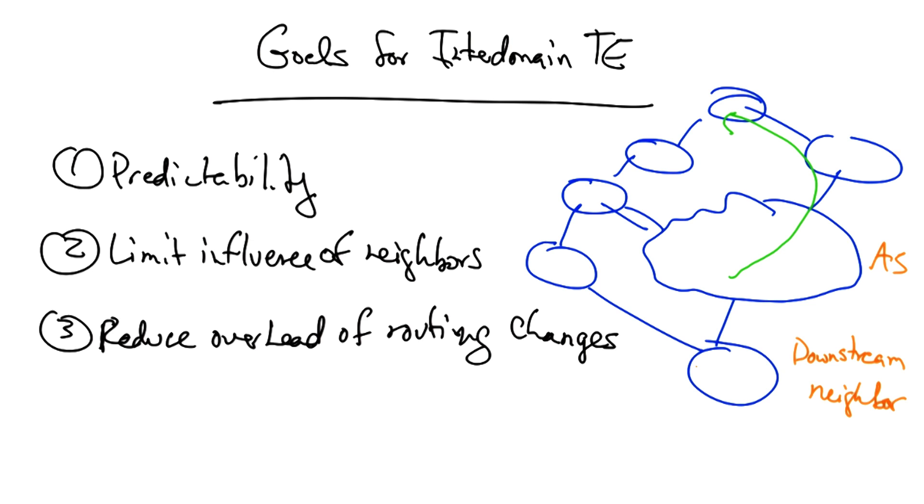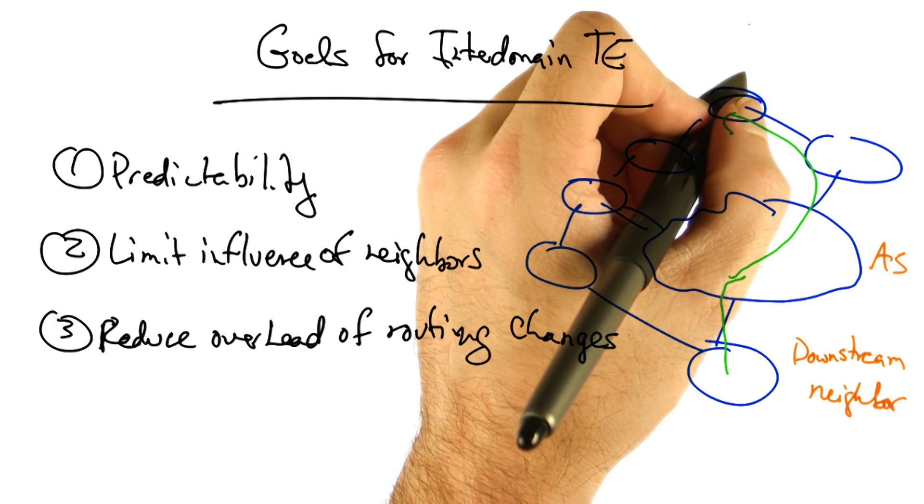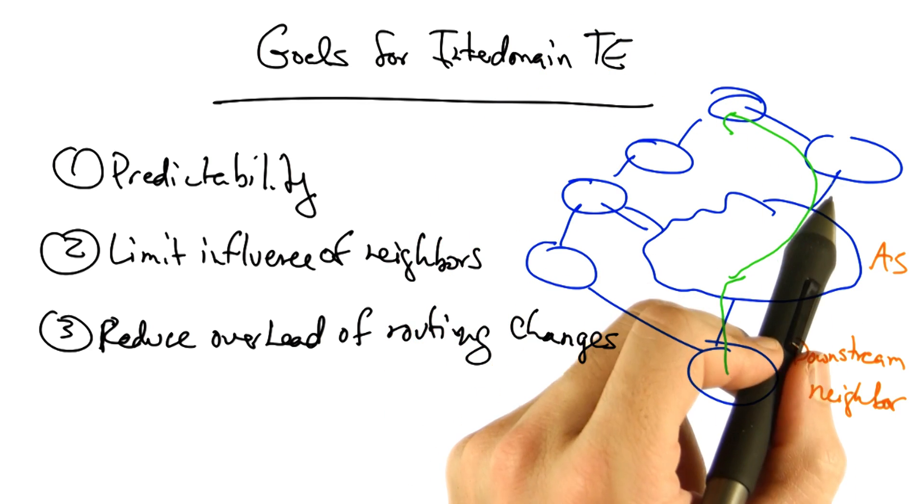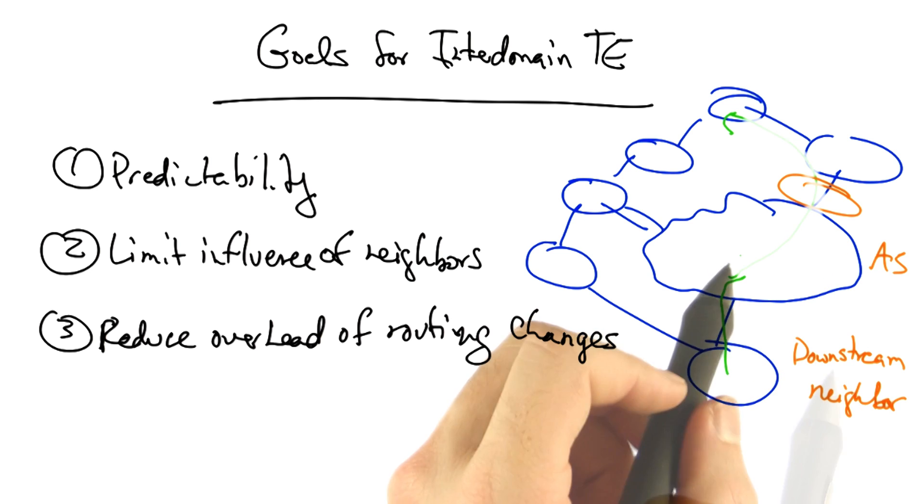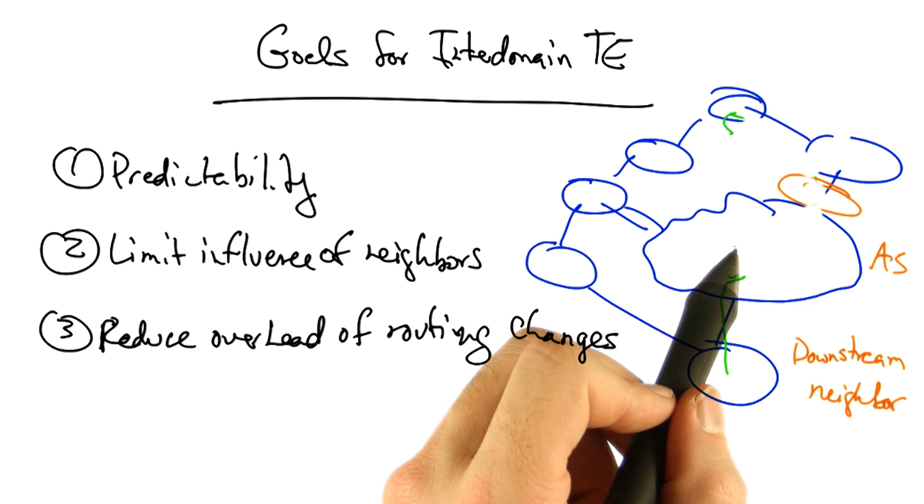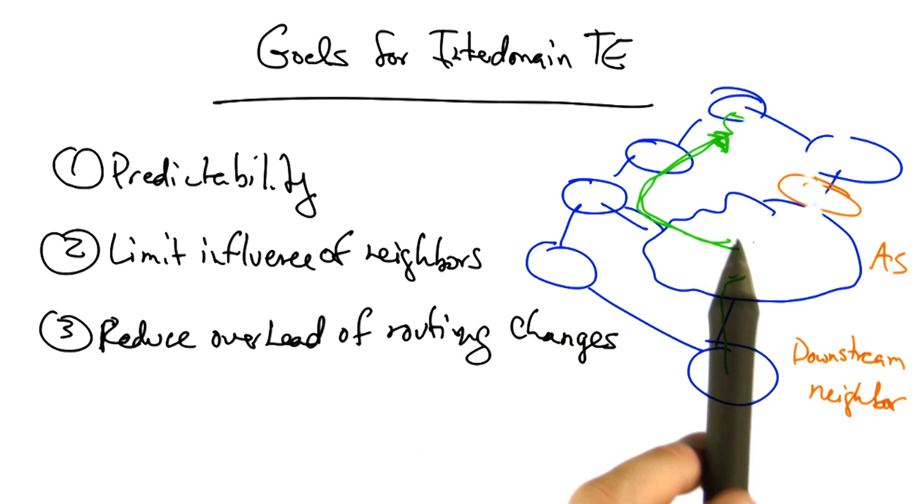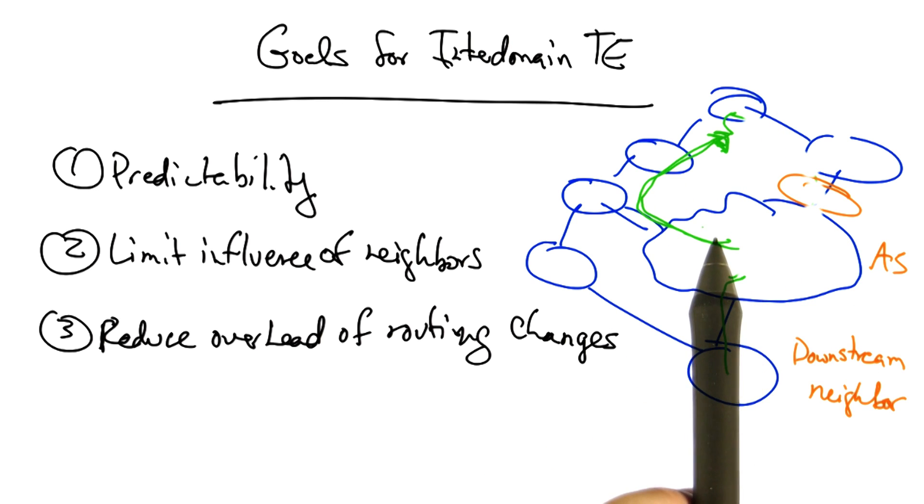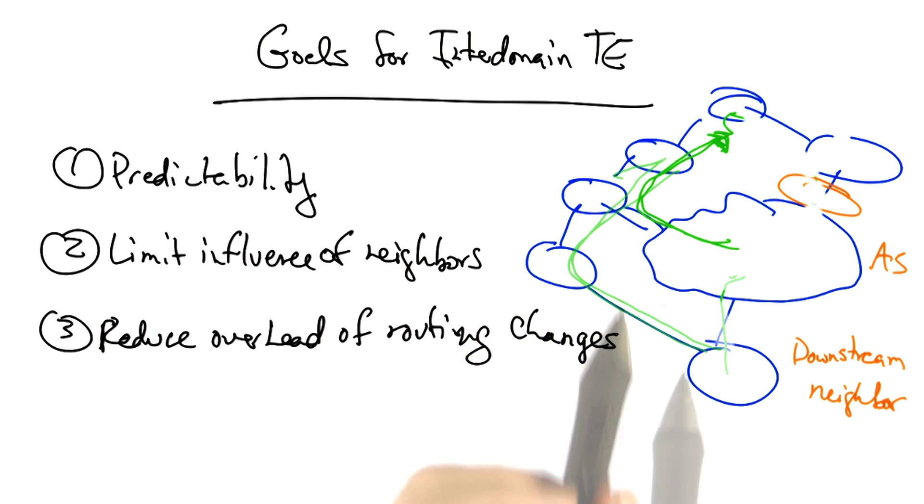To understand the factors that can confound predictability, let's look at how the interdomain routing choices of a particular autonomous system can wreak havoc on predictability. Let's suppose that a downstream neighbor is trying to reach the autonomous system at the top of this figure. The AS here might wish to relieve congestion on a particular peering link. To do so, this AS might now send traffic to that destination out a different set of autonomous systems. But once this AS makes that change, note that it's choosing a longer AS path, now taking a path of three hops rather than two.